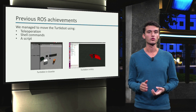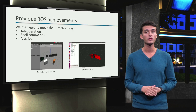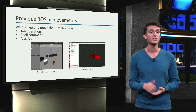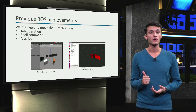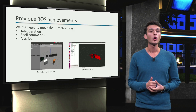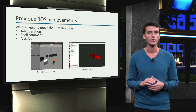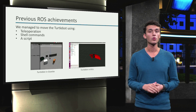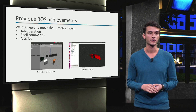We have already interacted with the TurtleBot and succeeded in moving it around in multiple ways. First of all, using teleoperation — we used our keyboard to send commands to the robot and move it around. We also used the command line and wrote some simple scripts to move the robot in more interesting ways. RViz has also helped us to visualize what the robot is doing.